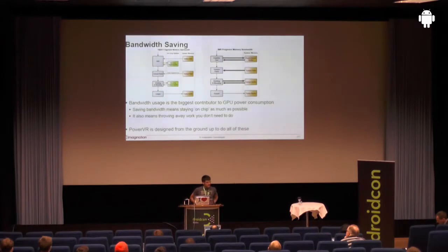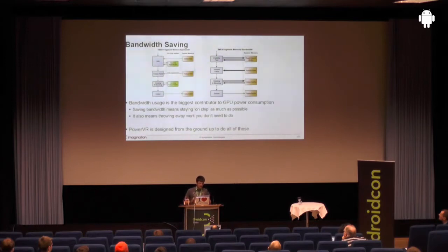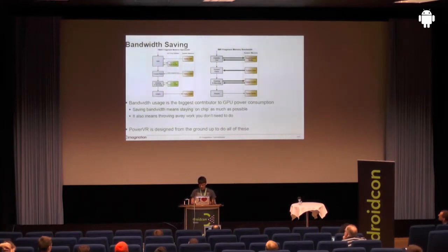The first advantage that comes to mind is bandwidth saving, and that's what our customers are happiest about. If you go to the Amazon Kindle Fire webpage, you'd see 'super bandwidth efficient' — and it is. The arrows on the diagram may be a bit of an exaggeration for the immediate mode renderer, but the idea is the same: we save bandwidth. That's a problem for other vendors, but not for us. This has other implications we'll see in the next few slides.